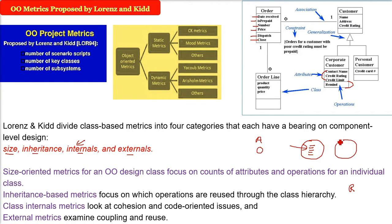The external metrics is talking about coupling and reuse. Coupling means two modules, how much interaction they have.